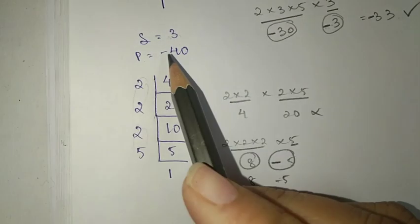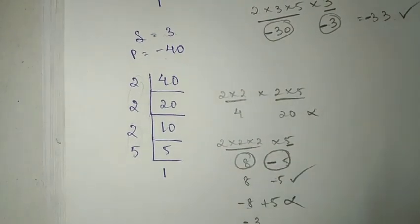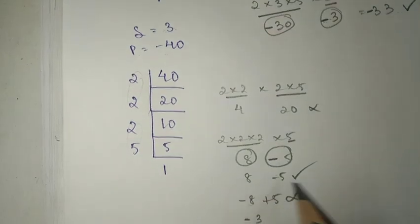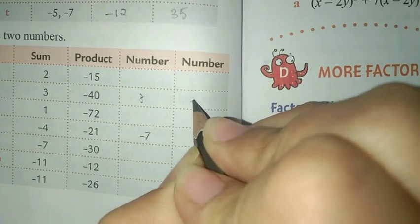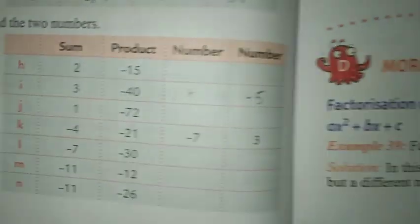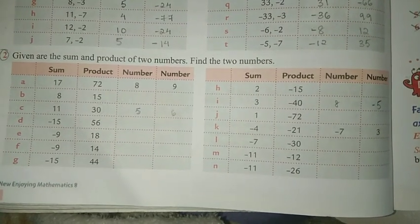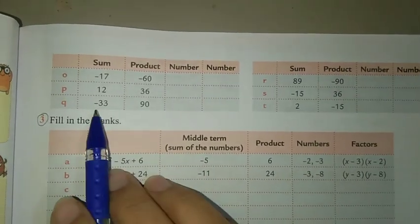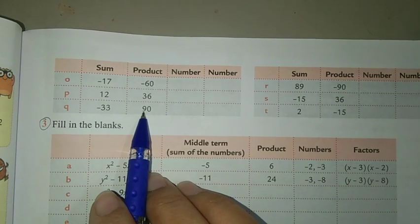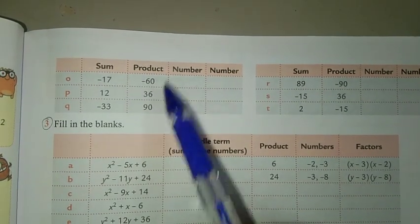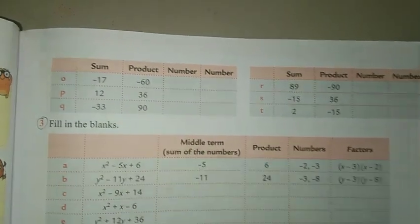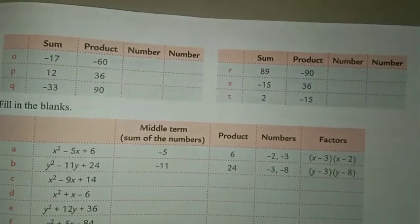Alright, now let's try another question over here. We have Q. 90 is the product, sum is minus 33. 90 prime factorization gives us: 90 divided by 2 is 45, 45 divided by 3 is 15, 15 divided by 3 is 5, and 5 divided by 5 is 1.